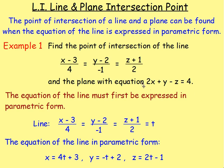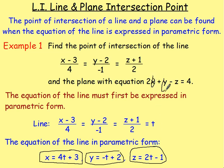We know the equation of the plane is 2x + y - z = 4, but we have just worked out that x = 4t + 3, y = -t + 2, and z = 2t - 1. So with our x, y, and z, we can sub these values in: replace x with 4t + 3, replace y with -t + 2, and replace z with 2t - 1.